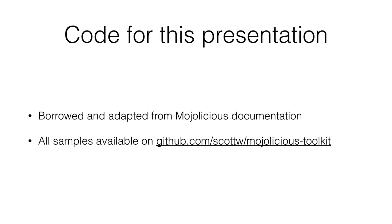The code for this presentation is available right now on GitHub at the provided URL. A little over half of the examples I'll go through I borrowed from the documentation itself. I'm going to make a quick pass through the Mojolicious toolkit — all of the little tools, components, and utilities that come with Mojolicious, but not the framework itself very much.